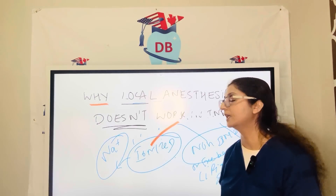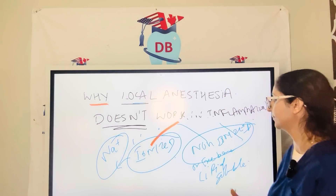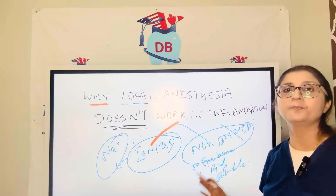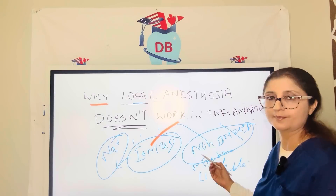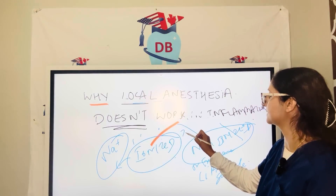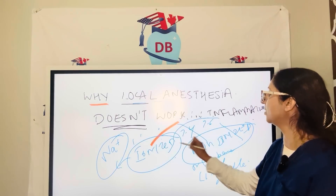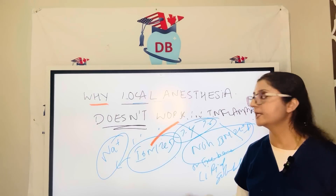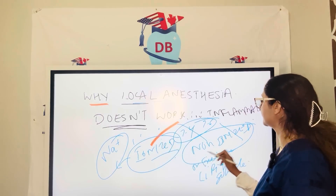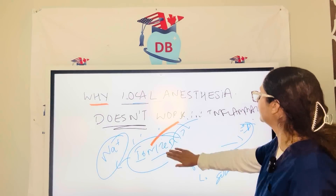When the tissue pH is normal — around 7.4 — there is an equilibrium that exists between the ionized and the non-ionized form, which allows enough freebase form to penetrate and produce anesthesia.